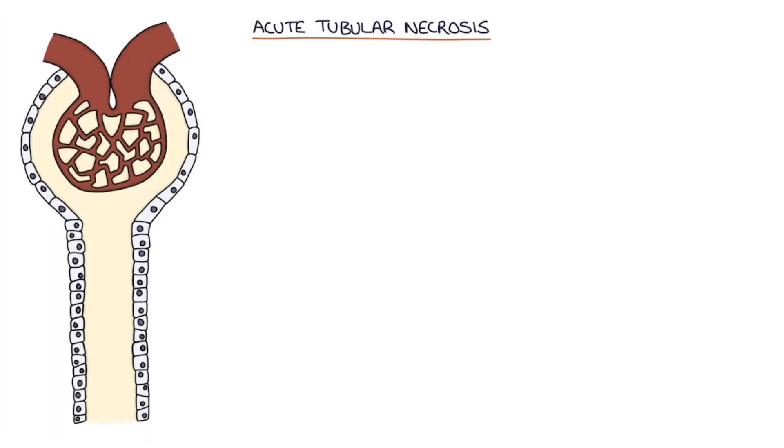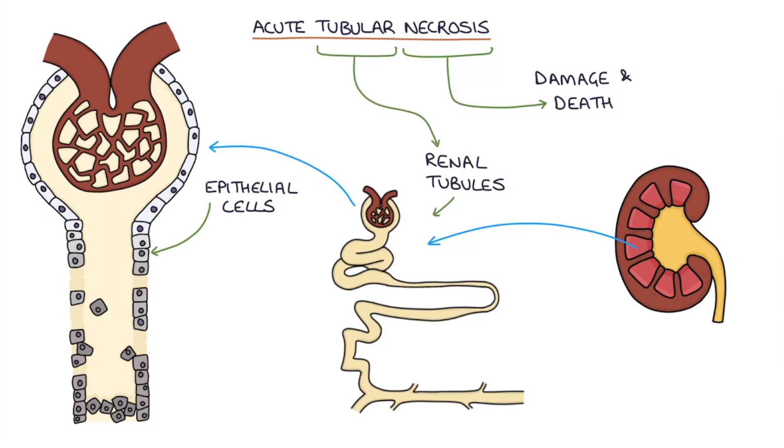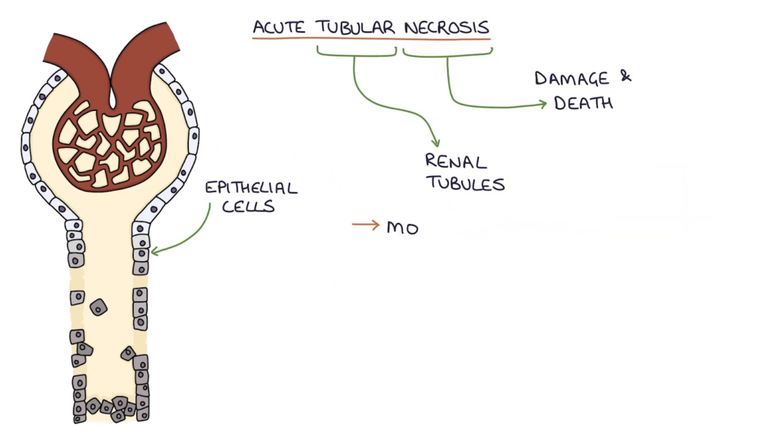Acute tubular necrosis is damage and death—remember death we call necrosis—of the epithelial cells of the renal tubules. And these are the cells that line the tubules. This is the most common cause of acute kidney injury.